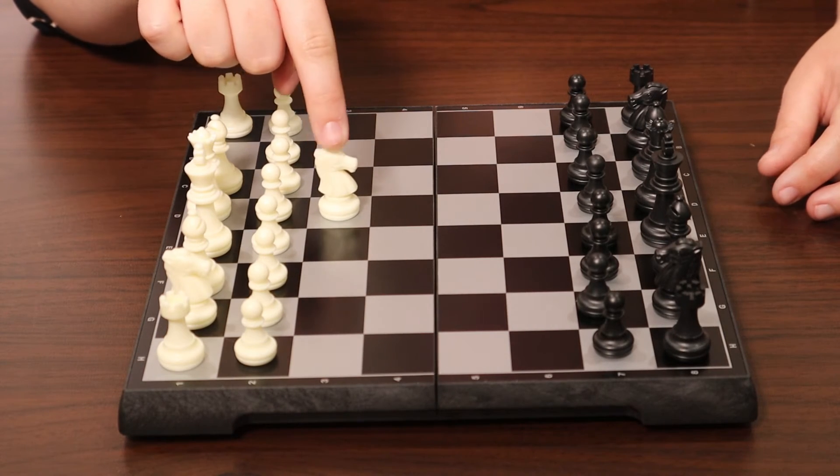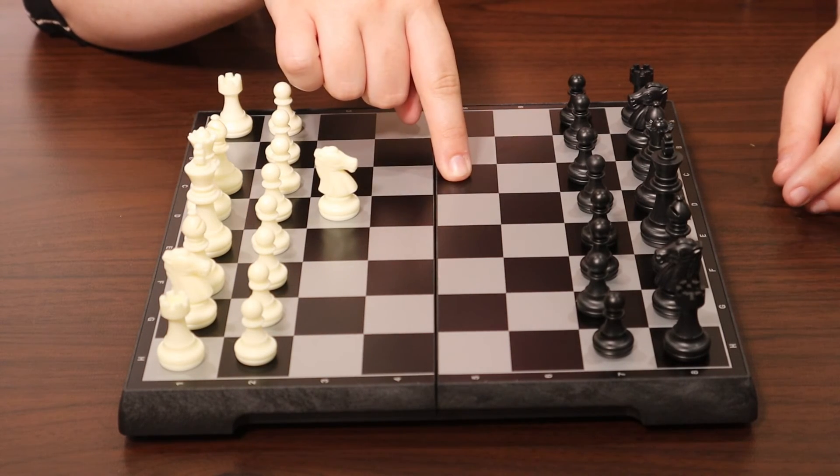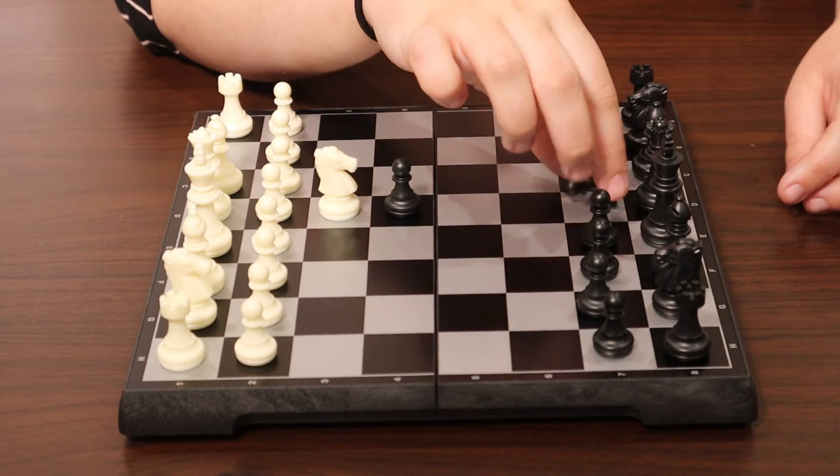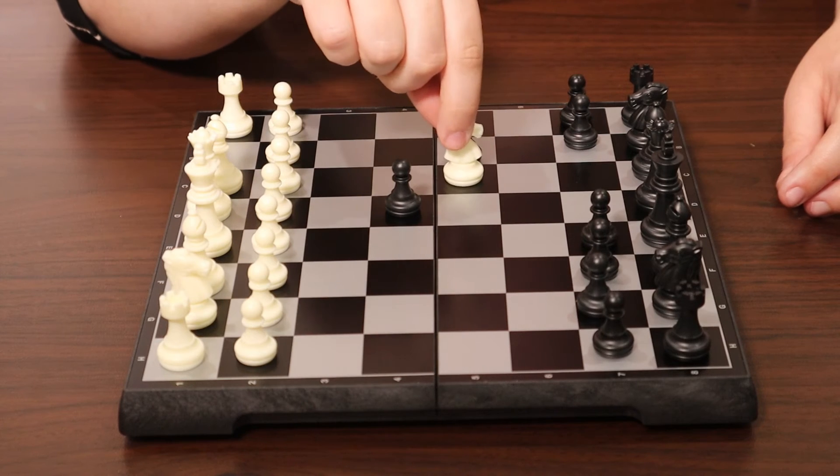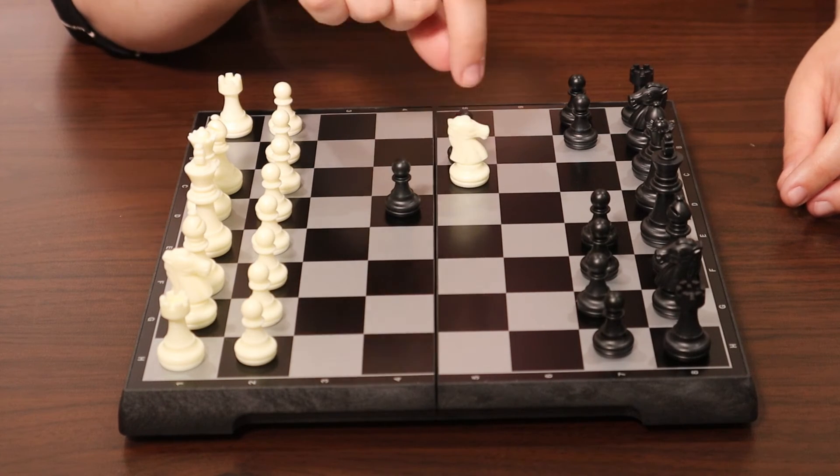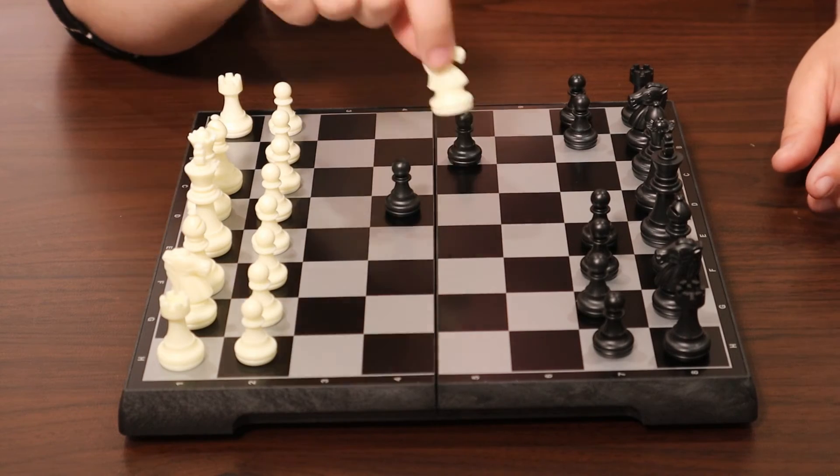And to take with the knight, it has to be on its ending piece. You can't take one in the middle. So if there was a pawn here and a pawn here, and you took this one, you wouldn't be taking this one too. You would only be taking the piece in the ending position of your knight.